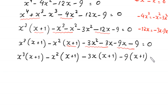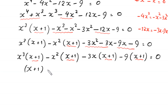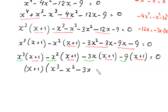Since (x + 1) is common throughout all groups, we factor it out, leaving (x + 1)(x³ - x² - 3x - 9) = 0.